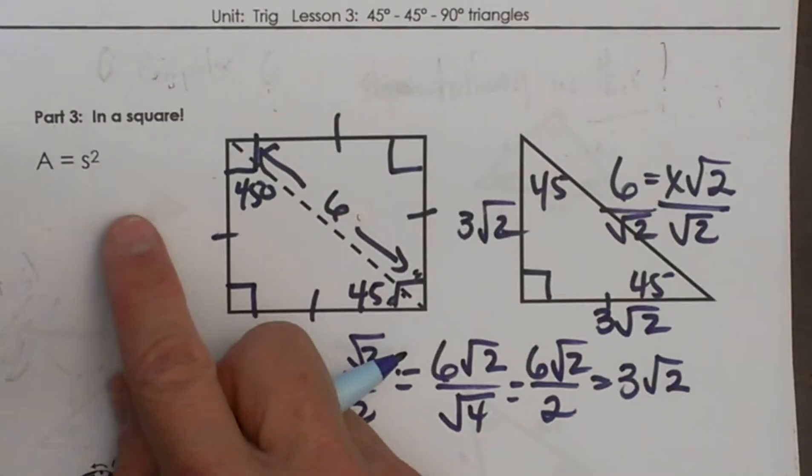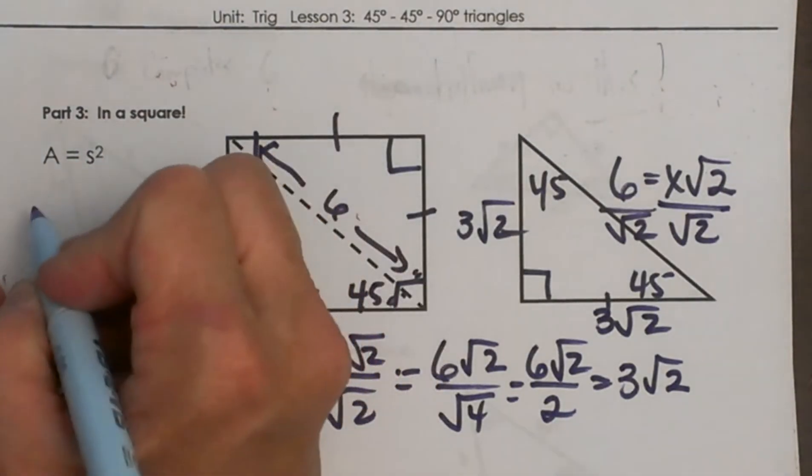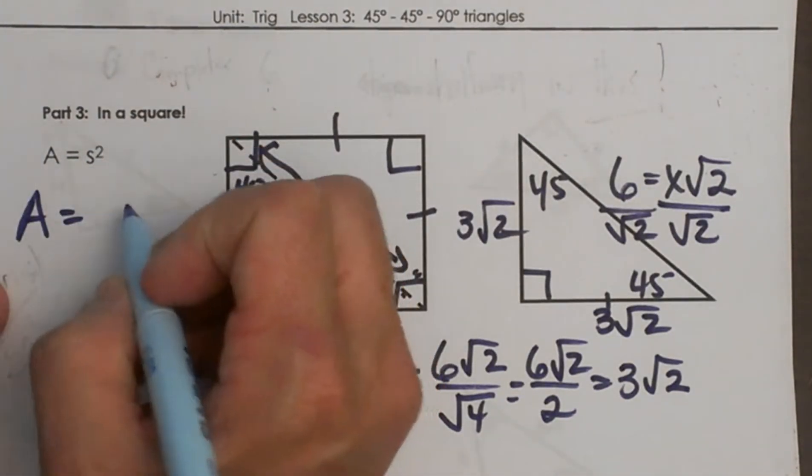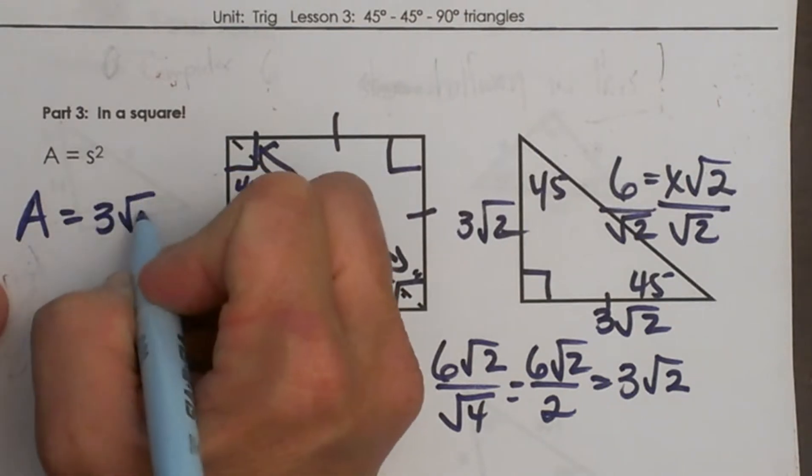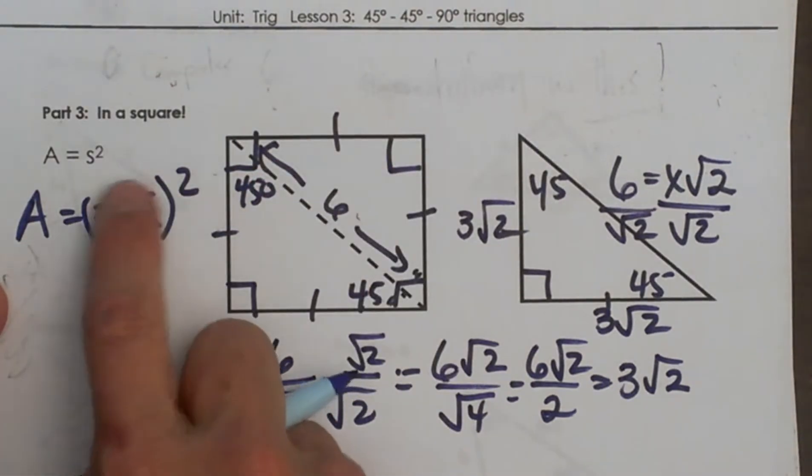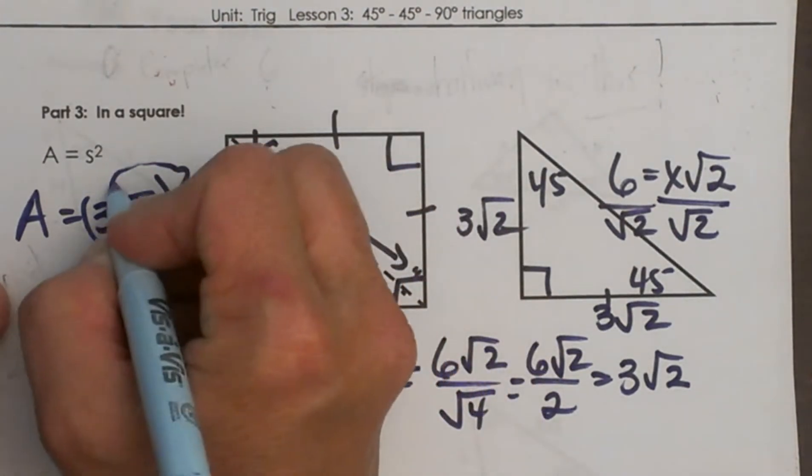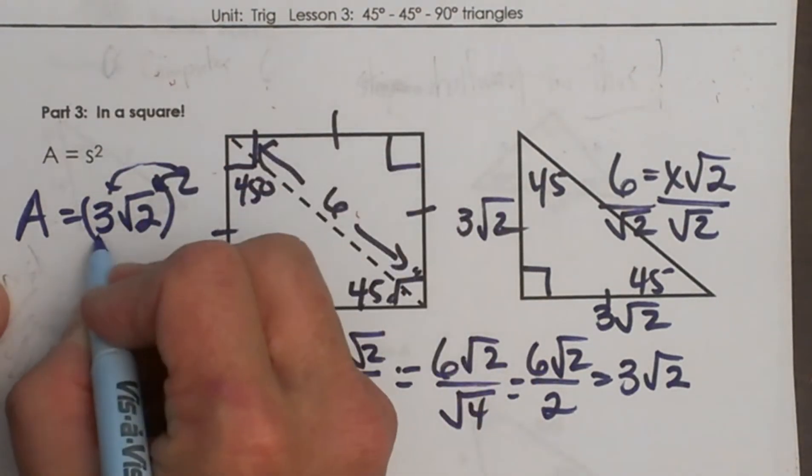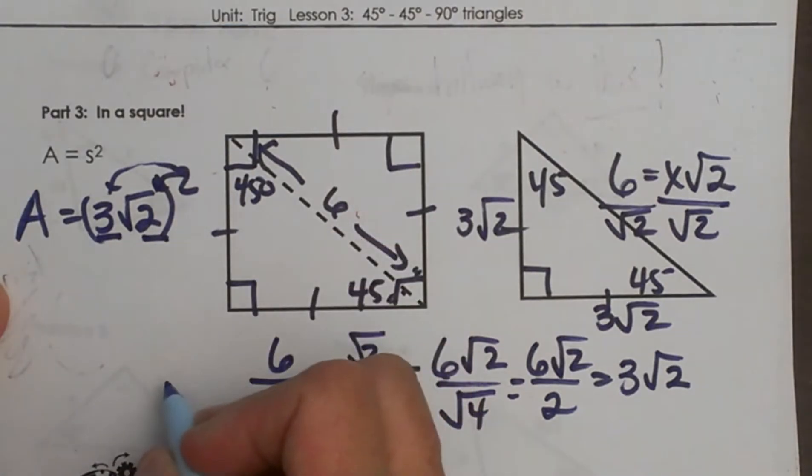Now I can just plug it into my formula. To find the area I take 3 square root 2 and I am going to square the whole thing, not just squaring the square root but also squaring the 3. So you have to kind of like distribute. We have to square the 3 and square the square root of 2.